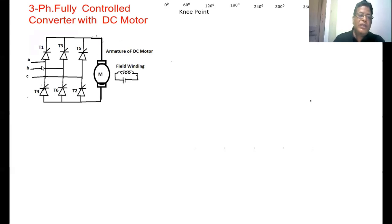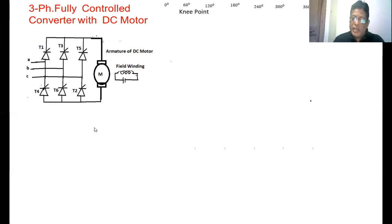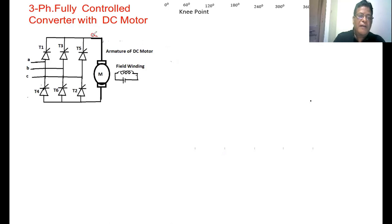This load is getting a voltage from the source only when one device conducts from the positive group and another device conducts from the negative group. Only then is there a closed path between the source and the load; otherwise the load is not getting any voltage. For example, if T1 is conducting from the positive group and T6 is conducting from the negative group, the upper terminal is connected to A phase and the lower terminal is connected to B phase, so the output voltage V0 equals VAB.